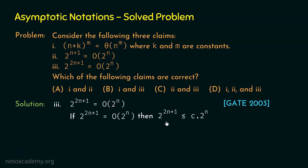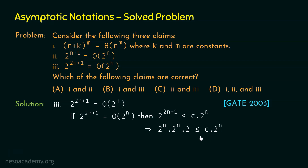Let's simplify this inequality. We can rewrite 2^(2n+1) as 2^(2n) × 2, and 2^(2n) can be written as 2^n × 2^n. So the left-hand side becomes 2^n × 2^n × 2, and the right-hand side is C × 2^n. Canceling 2^n from both sides, we are left with 2^n × 2 ≤ C, which can be rewritten as 2^(n+1) ≤ C.